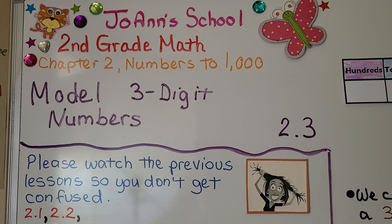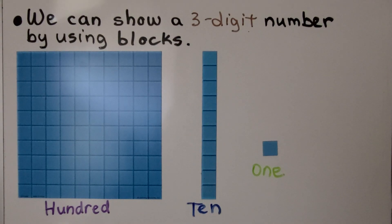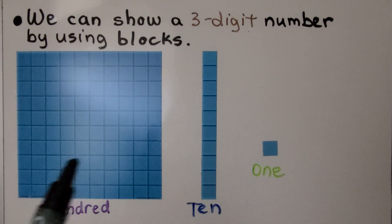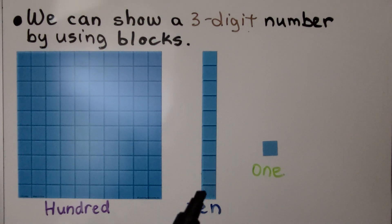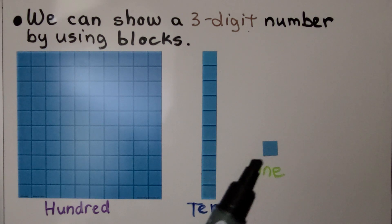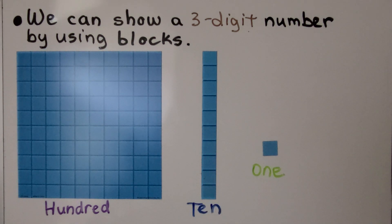Lesson 2.3: Model Three-Digit Numbers. We can show a three-digit number by using blocks. This is a hundred block. That's a ten long. And that's one little block — it represents one.